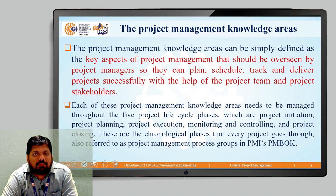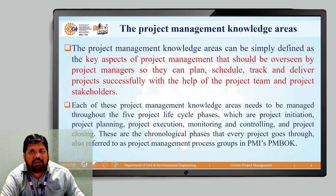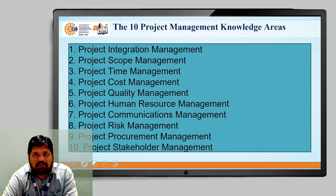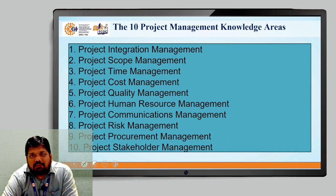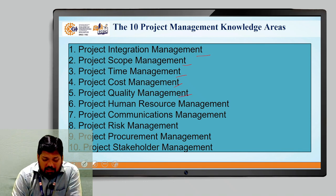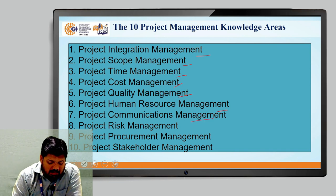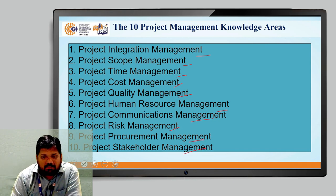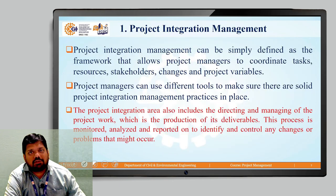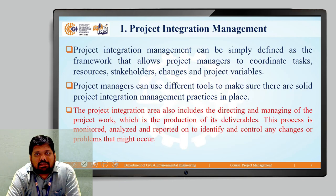All these domains are termed as project management knowledge areas. According to the Project Management Book of Knowledge, there are 10 project knowledge areas: project integration management, project scope management, project time management, cost management, quality management, project human resource management, project communication management, project risk management, project procurement management, and project stakeholder management. We are going to discuss all these 10 areas one by one.